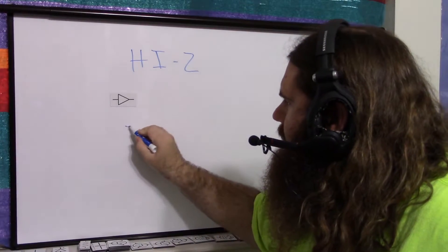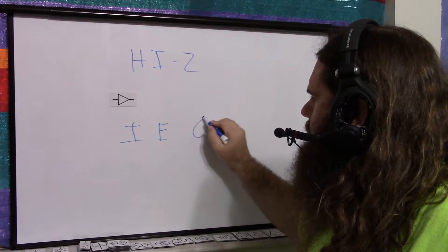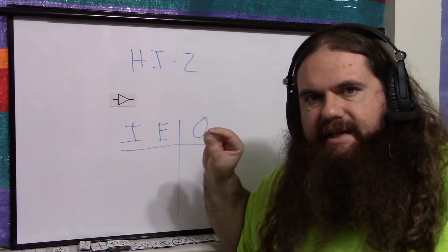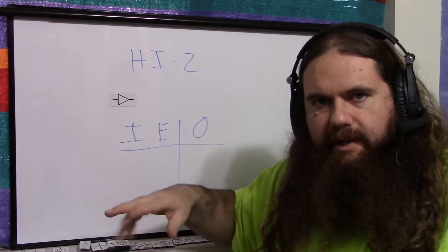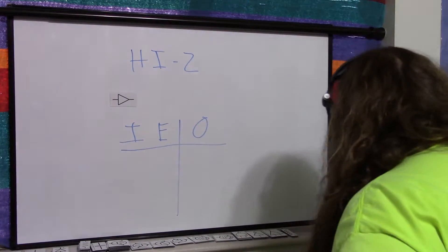And if you do a truth table, let's say you've got input, you've got enable, and you've got output. So input and output are just the input and output. Enable is a second signal, high or low, depending on how the chip works. It could be enable low, but let's say it's enable high.